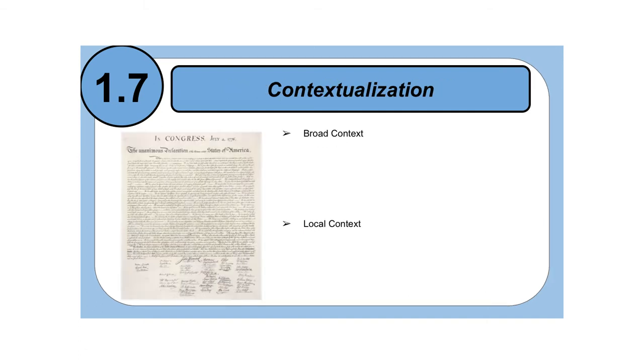The first historical thinking skill that we're actually going to look at today is called contextualization. This is a very important historical thinking skill that you must be able to master because you're going to have to provide contextualization in every single essay that you write in IB history. Contextualization is actually broken down into two different types of contextualization.